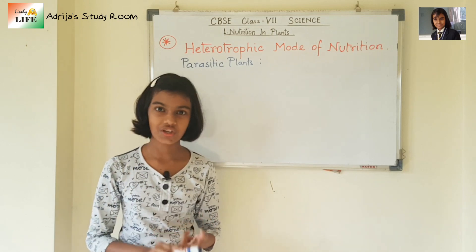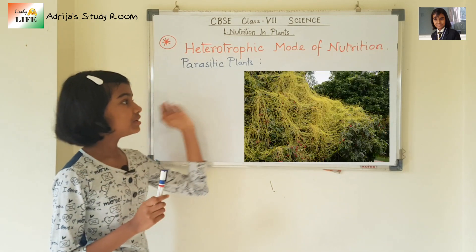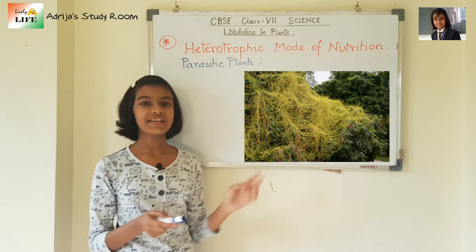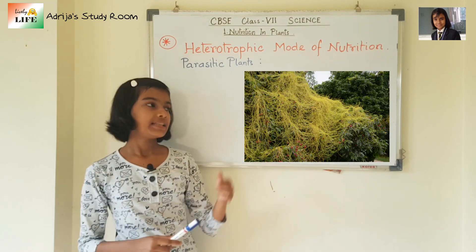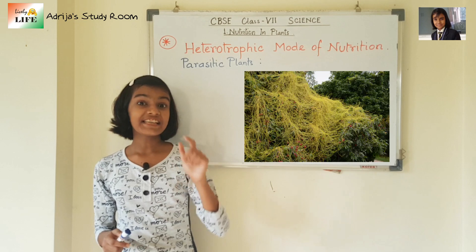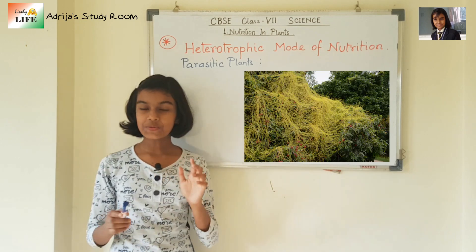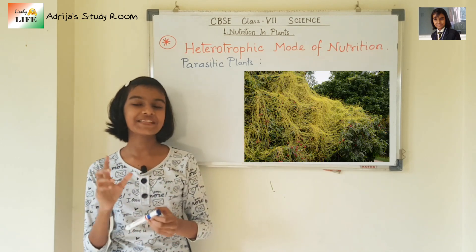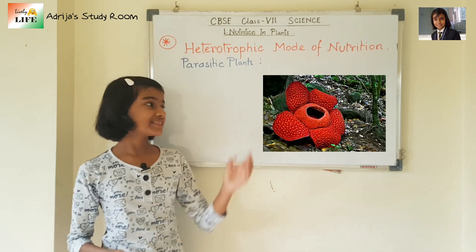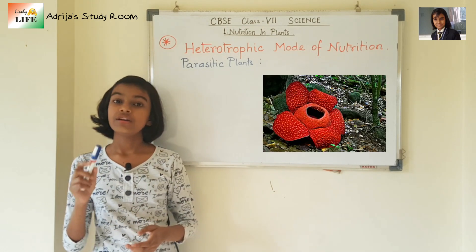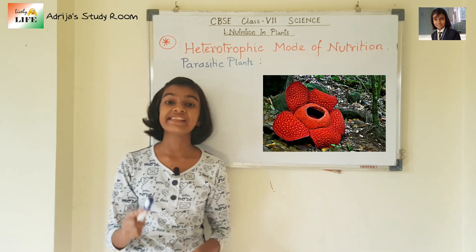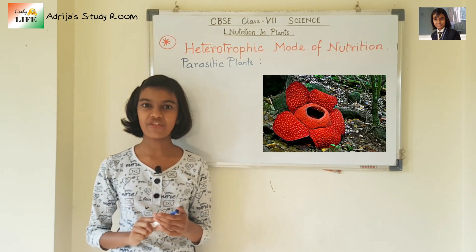Let's take the example of Cuscuta. Cuscuta is a yellow twining plant that is generally found in treetops, and it absorbs nutrients from its host using some special roots. Rafflesia is also a parasitic plant and it has the biggest and heaviest flower.